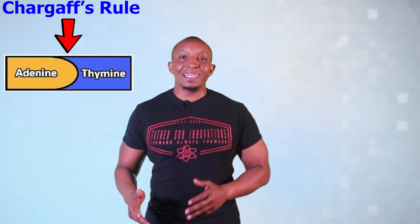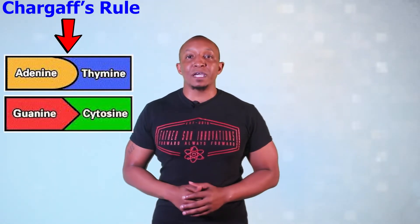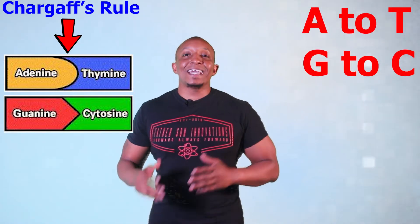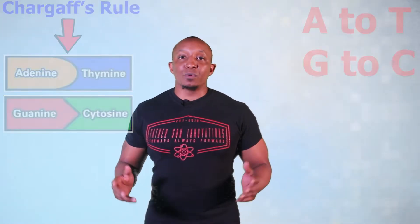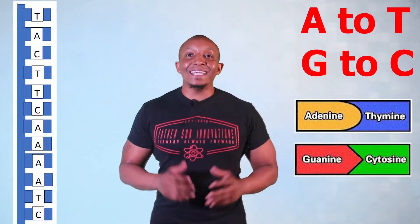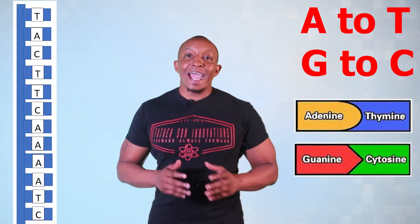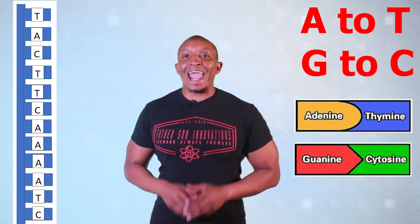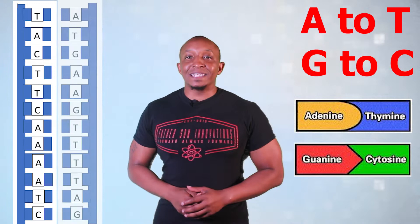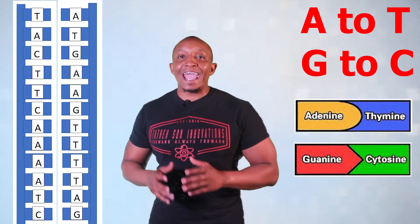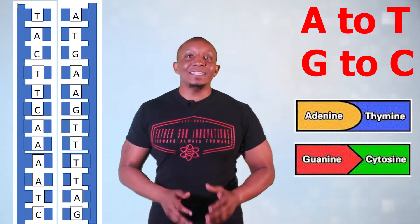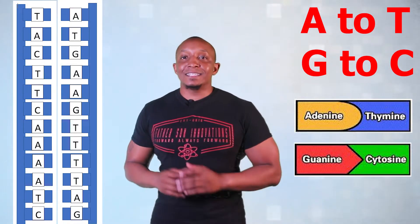In DNA replication, adenine pairs with thymine and cytosine pairs with guanine — A to T and G to C. For example, if one side of a DNA strand consists of TAC, TTC, AAA, ATC, the other side of the DNA strand will consist of ATG, AAG, TTT, TAG.